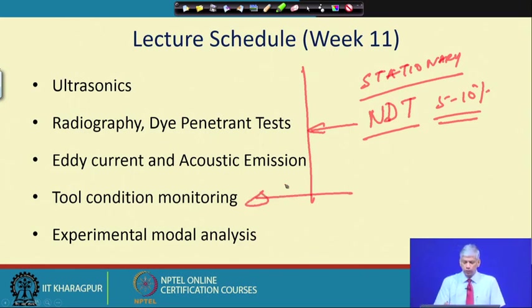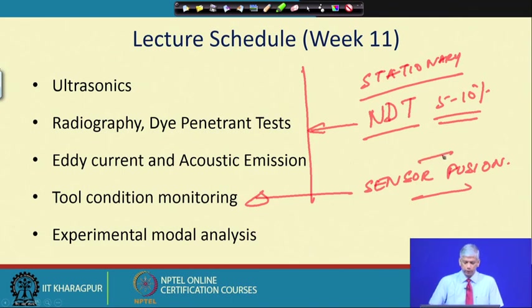We will also give an example of tool condition monitoring using sensor fusion through a project done a couple of decades ago. Another technique to be covered is EMA — Experimental Modal Analysis — where we find out the resonance of any machine. When a machine is operating we must not have resonance occurring, and EMA helps estimate the resonant frequencies to avoid that condition.